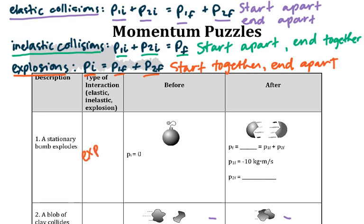So if we look at our interactions that's going to make sense to call this an explosion, where we start together and end apart. It tells you that the initial momentum is zero, and since we know from our equation that initial and final momentum have to equal, then we can go ahead and fill in a zero here for final momentum.